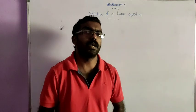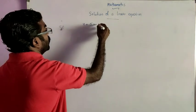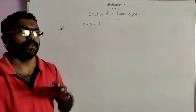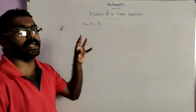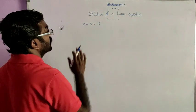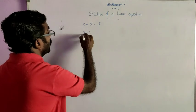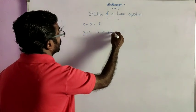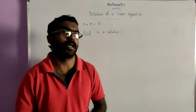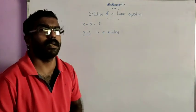Now let us consider an example of a linear equation in one variable: x plus 5 is equal to 8. What is the solution of this equation? Solution means the value of the variable which satisfies the given equation. Here if x is equal to 3, the LHS and RHS remain the same, so x equal to 3 is a solution. Is there any other number which satisfies the given equation? Certainly no — there is no number other than 3 which satisfies it.